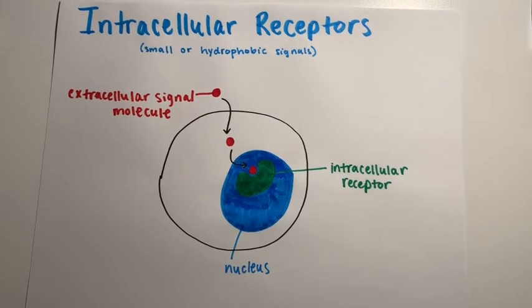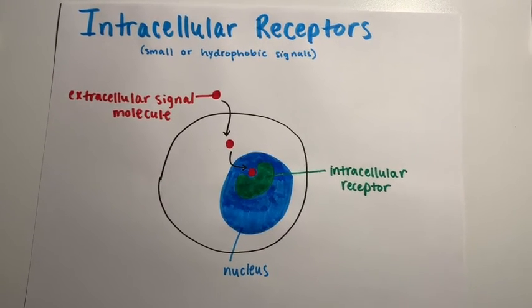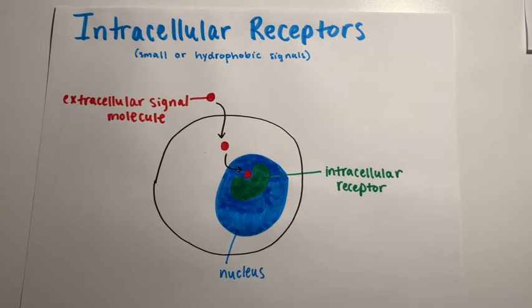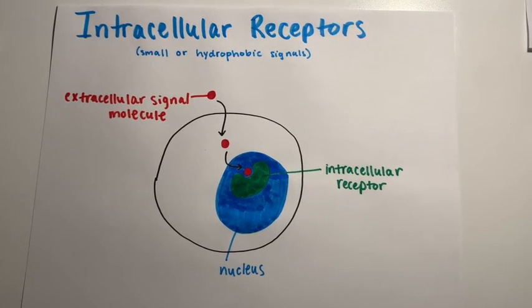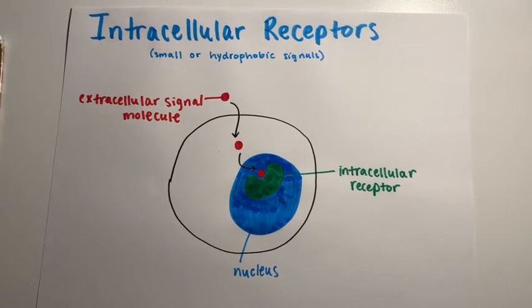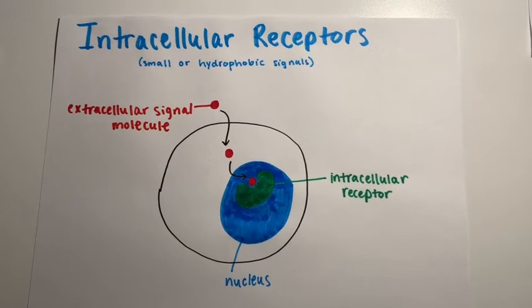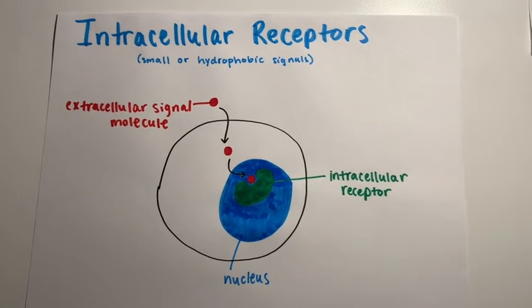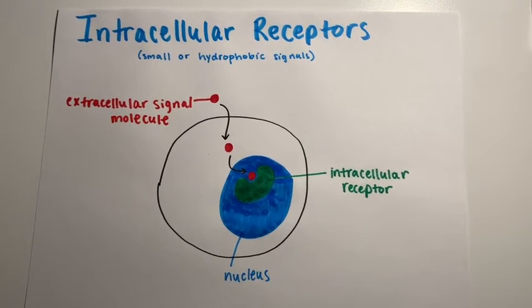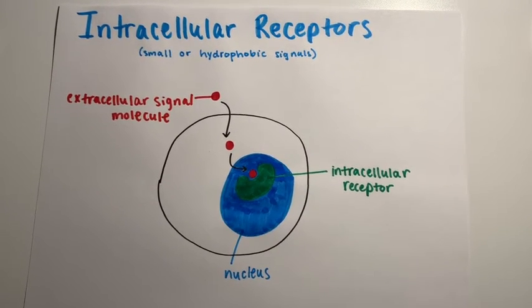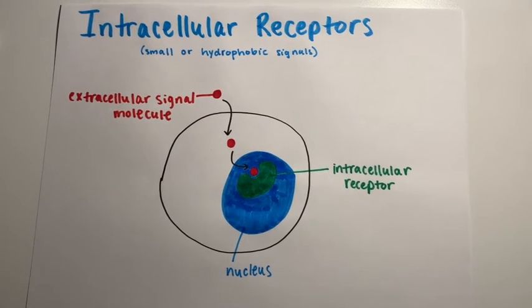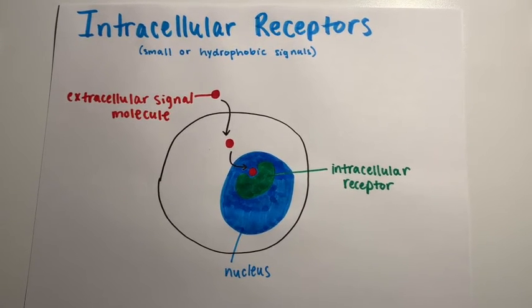In this diagram, we have intracellular receptors being demonstrated. In the red, we have the extracellular signal molecule and it's small or hydrophobic, which allows it to pass easily through the plasma membrane. And then either in the cytosol or in the nucleus, in this case the nucleus, the intracellular receptor and the extracellular signal will bond together and this will help regulate any functions that want to be carried out in the cell.